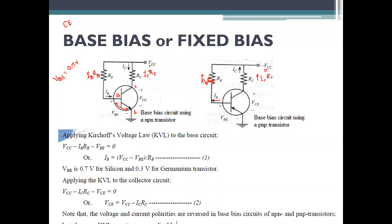Normally, I will not be using a PNP transistor — most of the times for applications I will take an NPN transistor. You have taken a voltage source connected to the collector and base, because of which collector current flows from collector to emitter. Now, we need to find out some formulas. We will apply KVL — Kirchhoff's voltage law — to the base circuit, which is the base and emitter circuit.